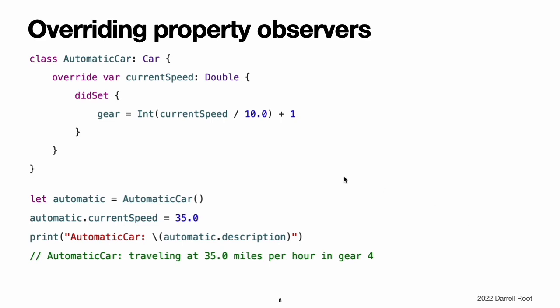This example defines a new class called AutomaticCar, which is a subclass of Car. The AutomaticCar class represents a car with an automatic gearbox, which automatically selects an appropriate gear to use based on the current speed. Whenever you set the currentSpeed property of an AutomaticCar instance, the property's didSet observer sets the instance's gear property to an appropriate choice of gear for the new speed. Specifically, the property observer chooses a gear that is the new currentSpeed value divided by 10, rounded down to the nearest integer, plus 1. A speed of 35.0 produces a gear of 4.